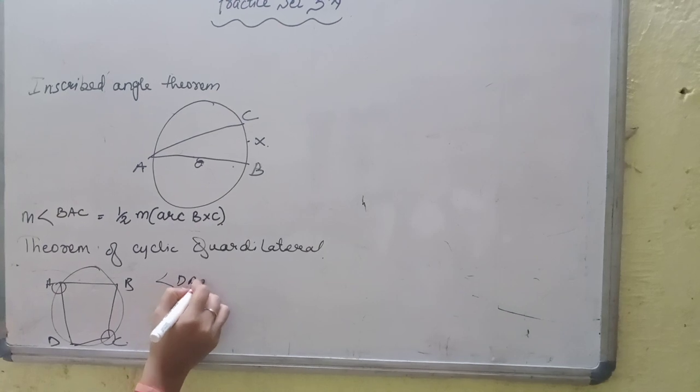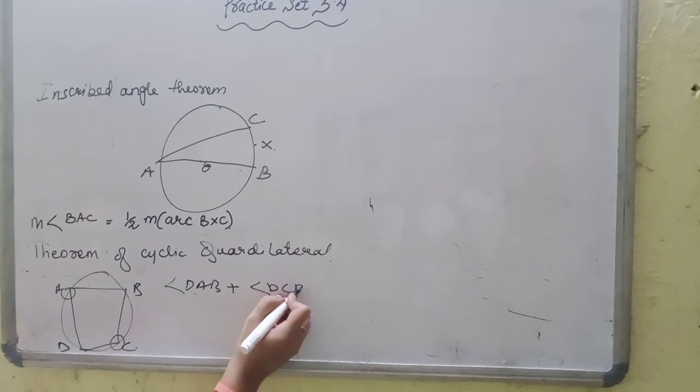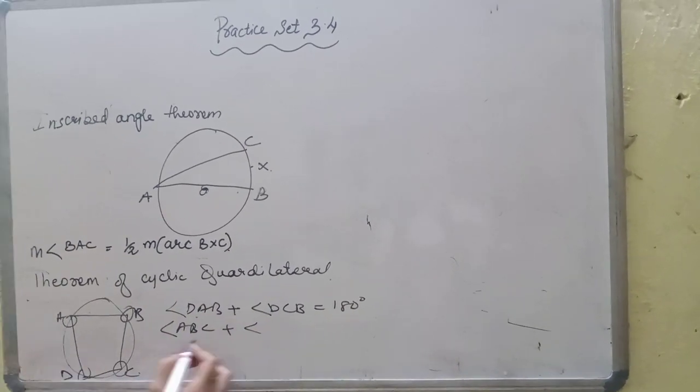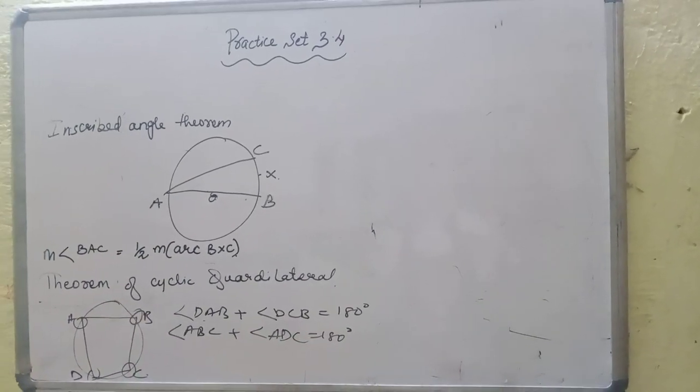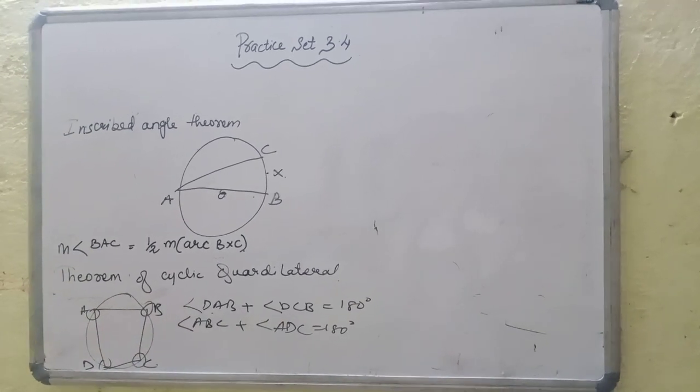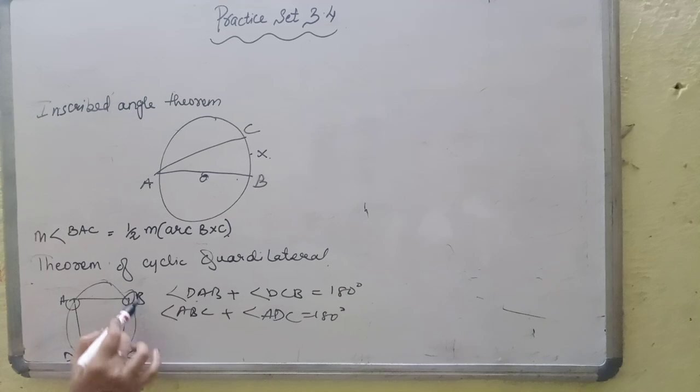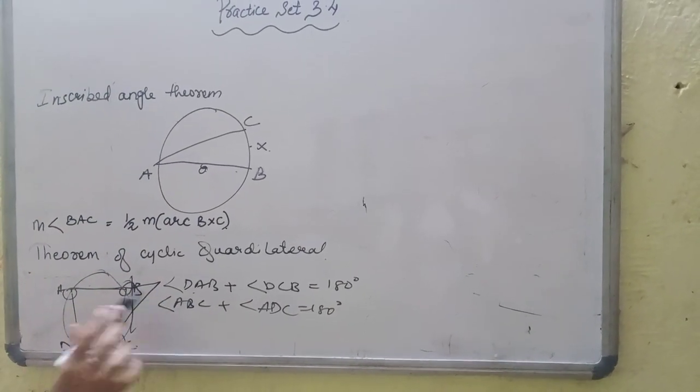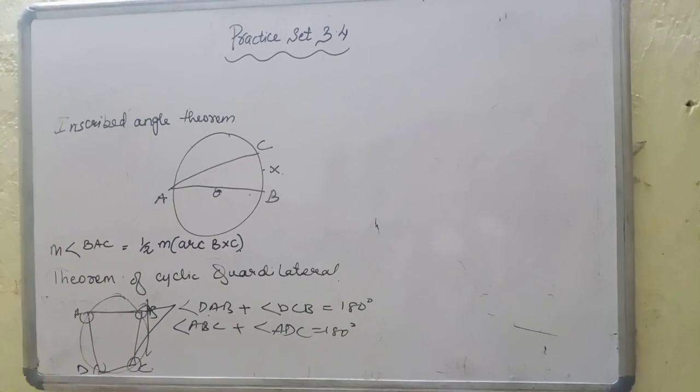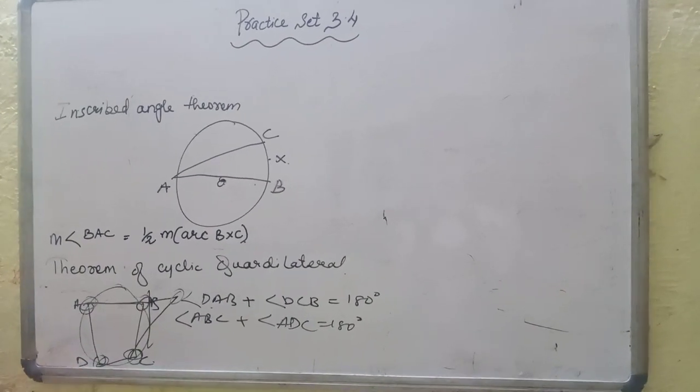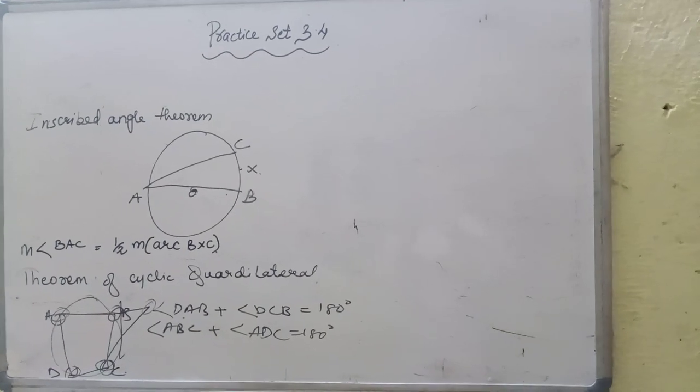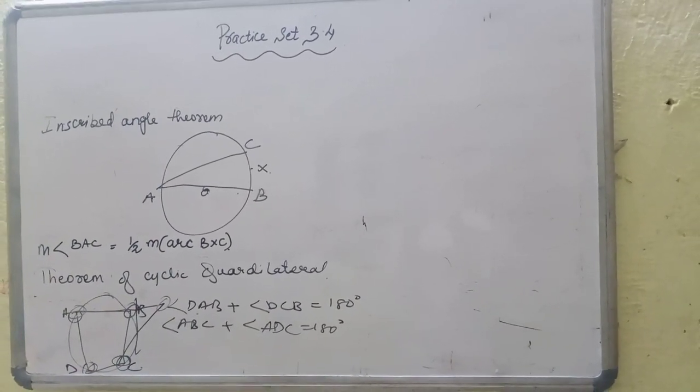Opposite angles. If we label this as A, B, C, then angle BAB plus angle BCD is equal 180 degree. Now converse of cyclic quadrilateral theorem. If a pair of opposite angles of quadrilateral is supplementary, the quadrilateral is cyclic. Let us start with the 3.4 practice set.